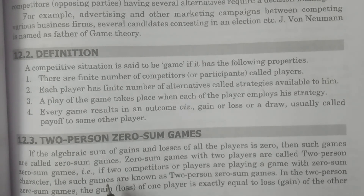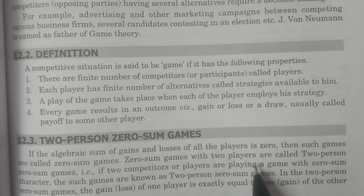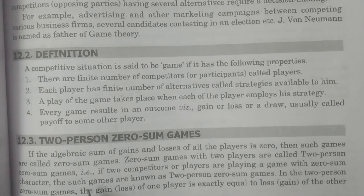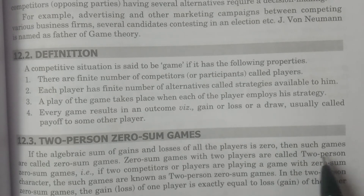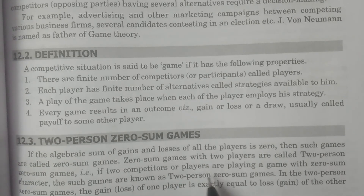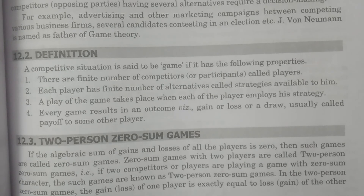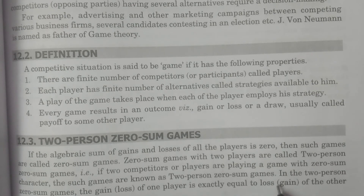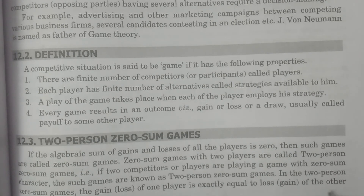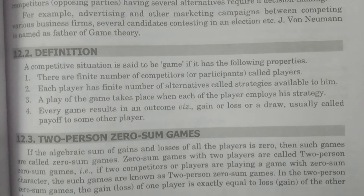Zero-sum games with two players are called two-person zero-sum games. Zero-sum games means the algebraic sum of gains and losses of the players is zero. If two competitors or players are playing a game with a zero-sum character, then such games are known as two-person zero-sum games. In two-person zero-sum games, the gain of one player is exactly equal to the loss of the other player, and similarly, the loss of one player is exactly equal to the gain of the other player.